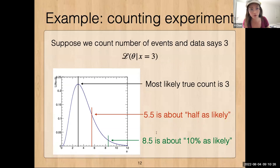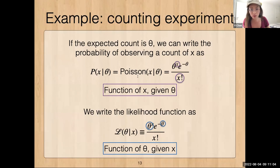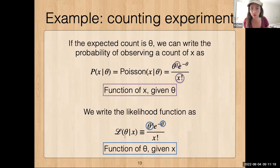There are two closely related functions we need to keep in mind. The first is the probability density function: if we have a fixed theory parameter — say a rate — what is the distribution of what we might see in data, in this case the Poisson distribution. The likelihood function looks very similar on the right-hand side, but conceptually it's reversed: the number of data points we observe is given, and we write it as a function of the true parameters we want to learn.